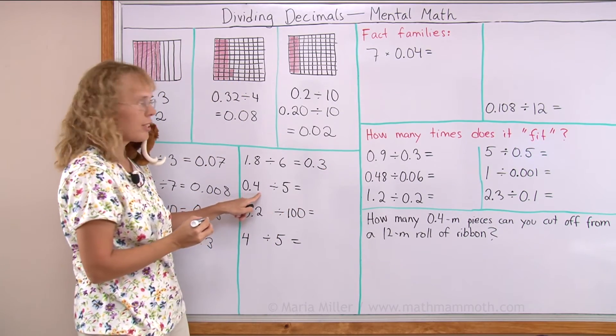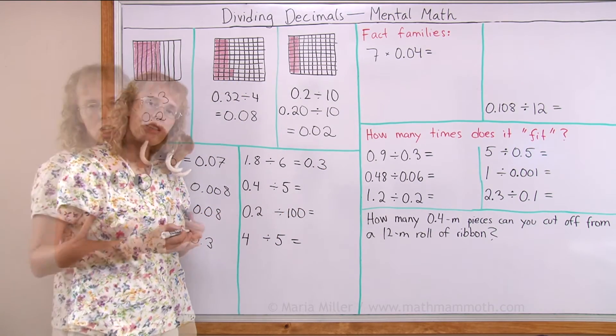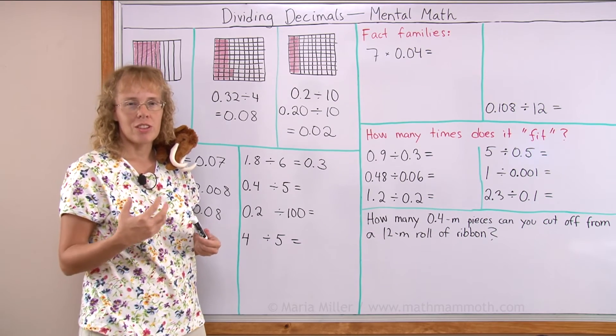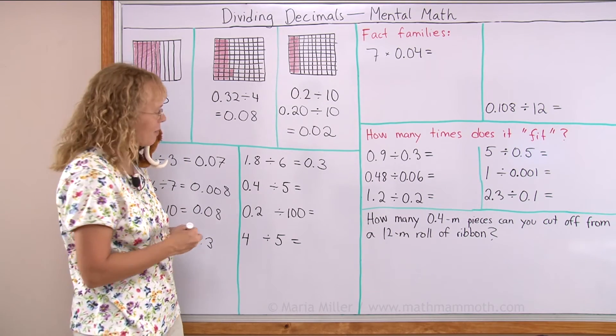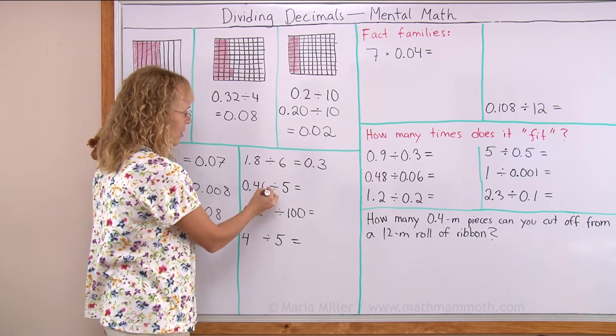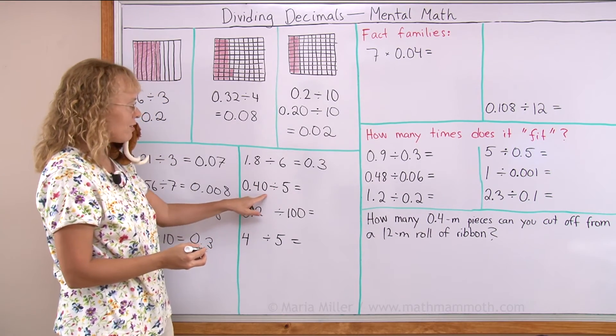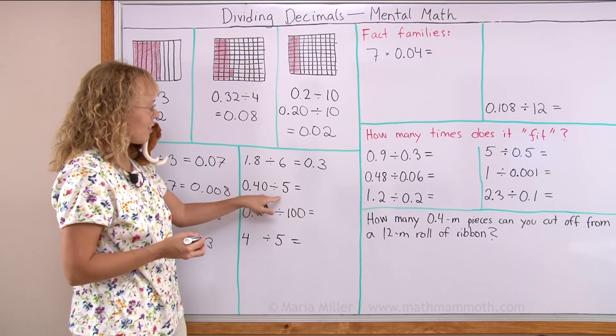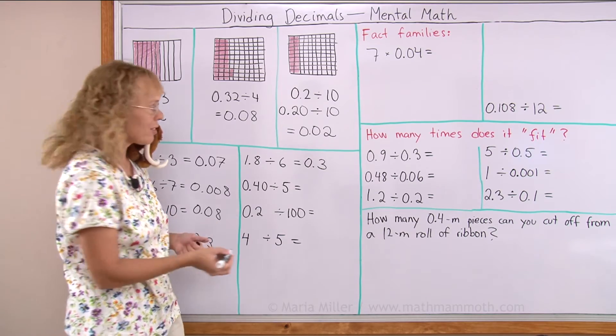Here I have four tenths divided by five. It looks like it's not an even division, or not easy to do mentally. But what I can do is I can use this trick. Tag a zero. Now I have forty hundredths divided by five. Eight hundredths, right?